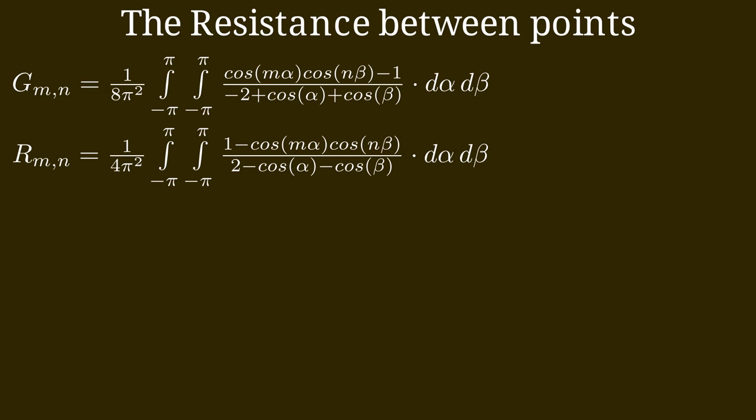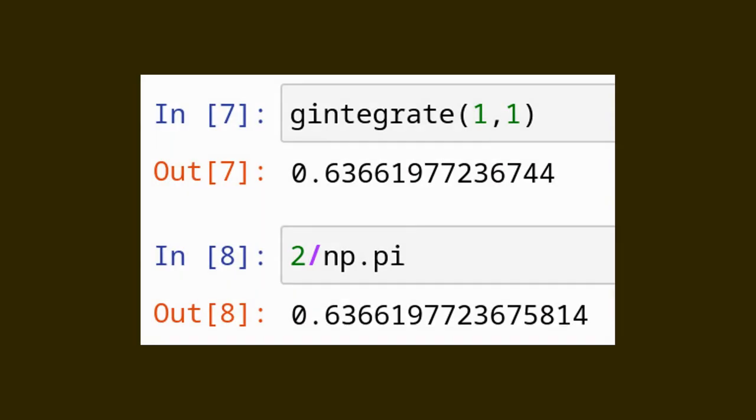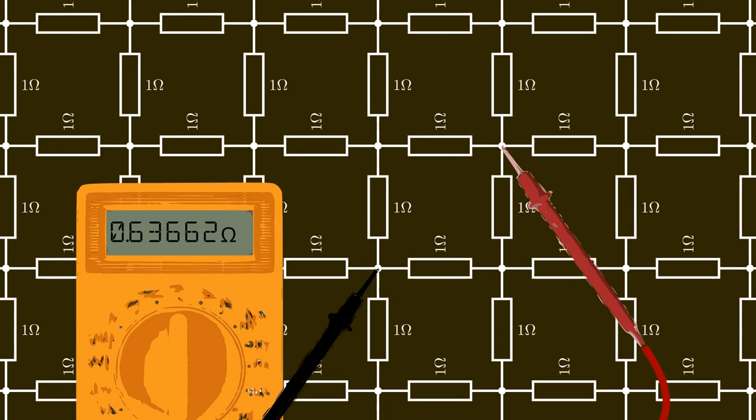By plugging in a certain value of m and n we can numerically evaluate this integral. Let's do this in Python NumPy. This is a function that evaluates the function g on 2000 times 2000 points — that is 4 million points on a grid — and then uses the NumPy trapz function to get an approximation of the integral assuming trapezoid lines between the grid points. The function accepts m and n as input parameters. If we evaluate this at (1,1) we get a value that only differs from the true value of 2 over pi at the 13th digit. So this is a good indication that our function is the right one. Of course this is not a proof — that is what we will do in the next chapter, where we will try to simplify the integral in an analytic way. Until now we just have a numerical evaluation. So stay tuned.